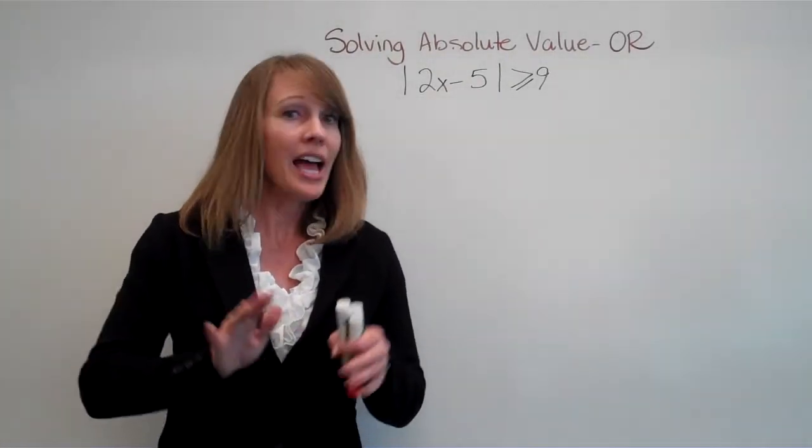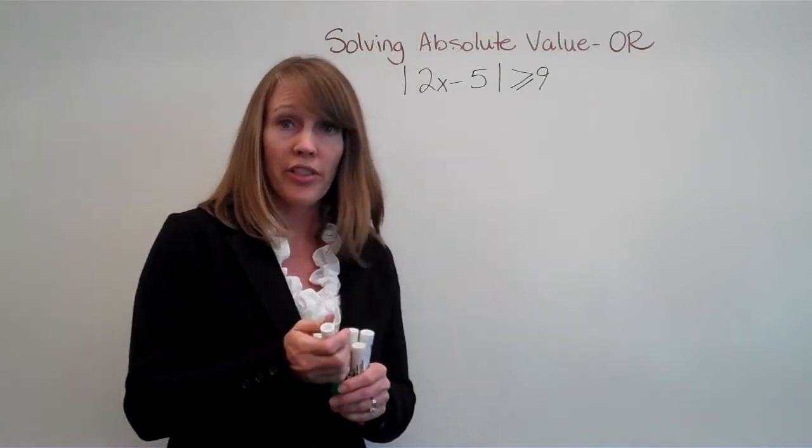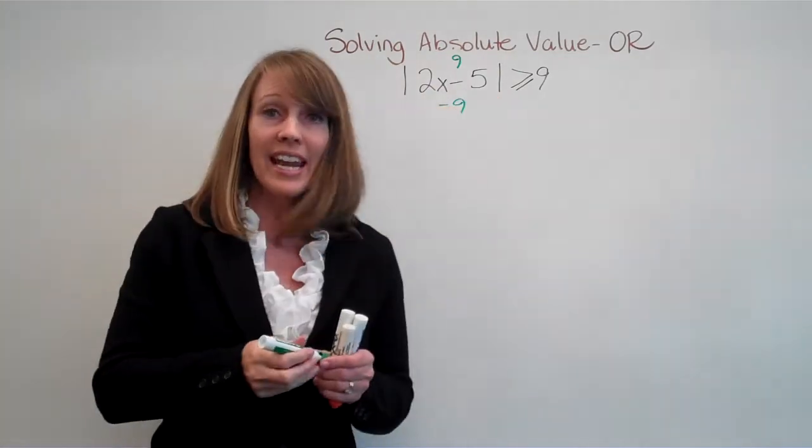All right, let's look at an OR example. Same thing as before when you have the absolute value. We knew before that the inside could be either a positive 9 or a negative 9.